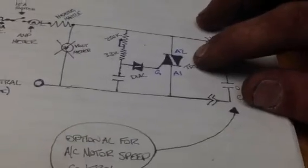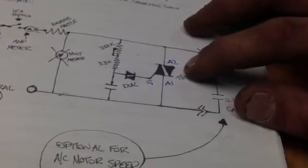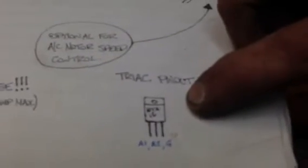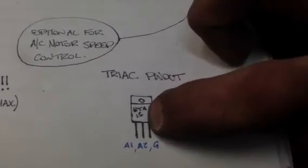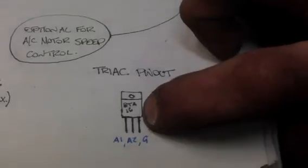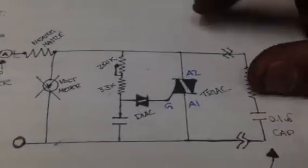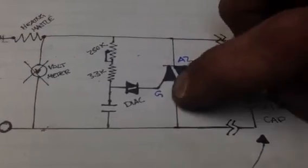But basically you got a TRIAC which is an alternating current switch. I'm not going to go into depth. This isn't an electrical tutorial. This is a quick how-to if anybody's interested for this thing. You got a TRIAC which kind of looks like this and you got your pins 1, 2, and 3 if you're looking at the front of it which are A1, A2, and G. And I've put on the schematic here A1, A2, and G.